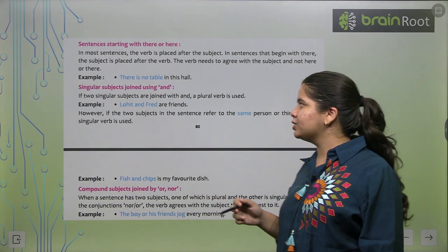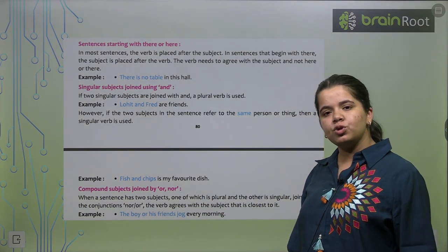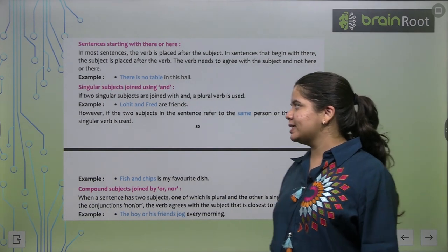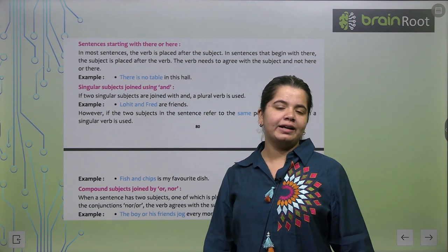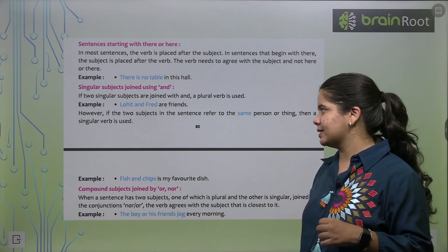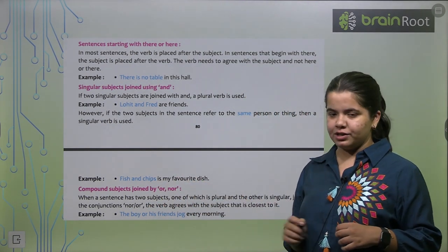Now, singular subjects, joined using and. Jo singular subjects hota hai, unko hum join karna hota hai, toh, hum and use ho karta hai. Jaise, Rohit and Fred are friends. Me and you are studying. Fish and chips is my favourite dish.